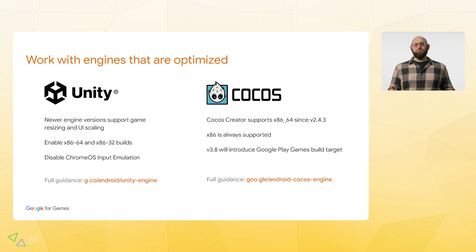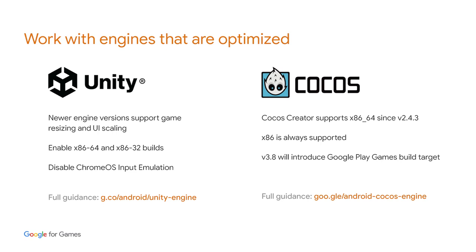One easy way to optimize is to take advantage of the engines we work closely with. Cocos and Unity have specific engine versions that are compatible with desktops, tablets, and foldable form factors. Newer versions of Unity handle game resizing and UI scaling automatically. In Unity Player Settings, toggle on Resizable Window to support resizability and multi-window modes. Additionally, turn on x86 architectures and disable Chrome OS input emulation for full control over trackpad and mouse interactions — both important for Chrome OS and Google Play Games for PC. These options are available in all actively supported versions, including LTS versions.